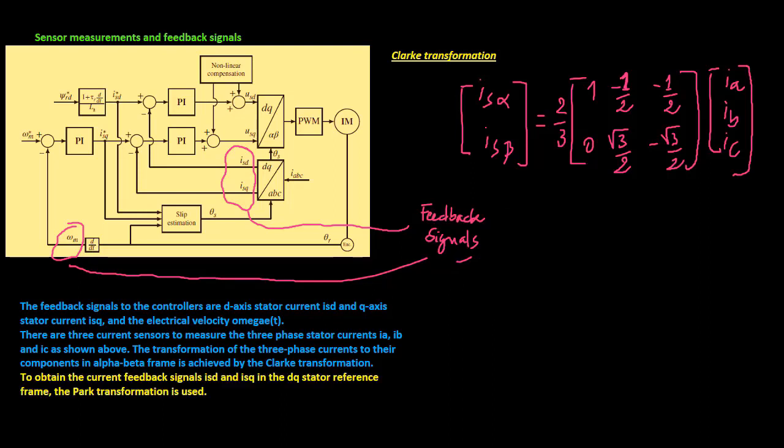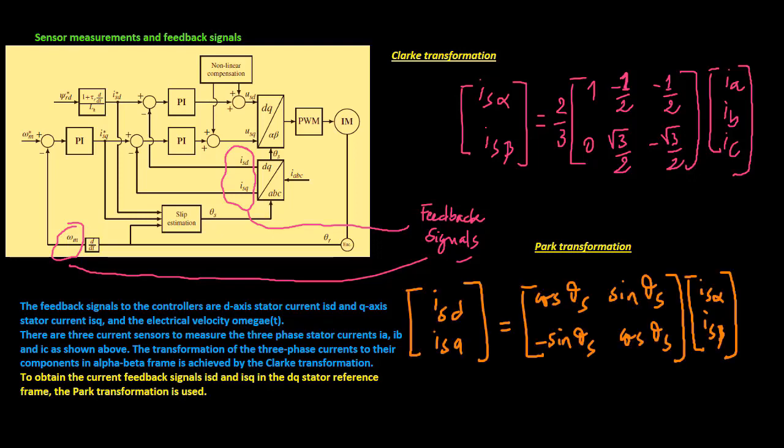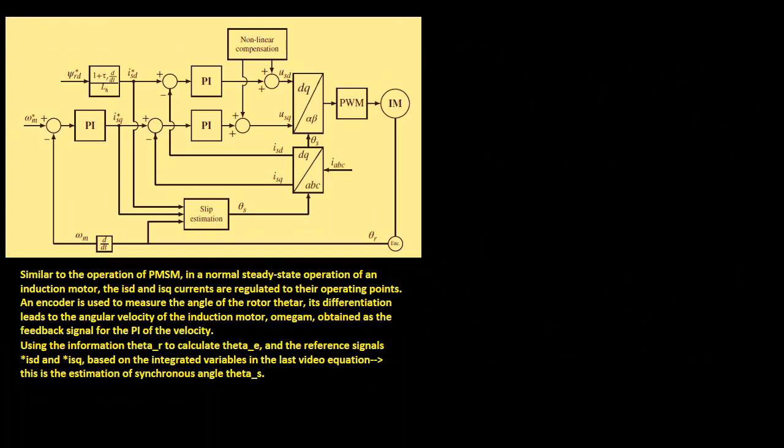To obtain the current feedback signals isd and isq in the dq stator reference frame, the following Park transformation is used. Similar to the operation of PMSM, in a normal steady-state operation of an induction motor, the isd and isq currents are regulated to their operating points.